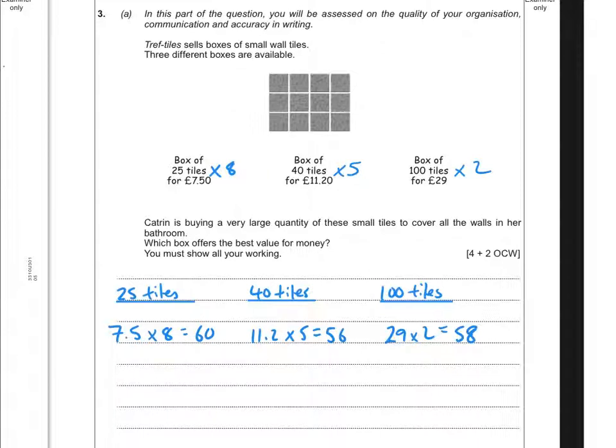Which box offers the best value for money? The box of 40 tiles offers the best value for money.